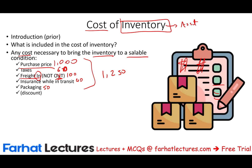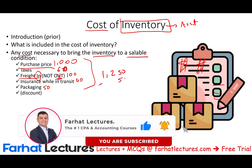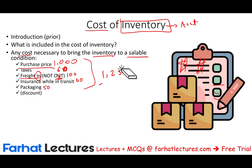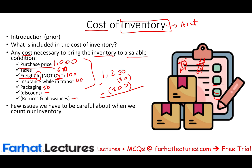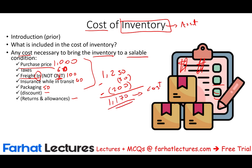Now if we receive any discount, any sort of discount, we will deduct it. Let's assume they give us a $30 discount. We can deduct that discount. Let's assume we returned $200 worth of items from this order, or they gave us an allowance — an allowance means they reduced the price because maybe they shipped it late. All those are included in the cost of inventory: the discount is a minus, returns and allowances are a minus, they get deducted. So if you ask me how much did that item cost, this item cost $1,170. That's the cost of the item. You need to know what's included and what's not included in the cost of inventory.